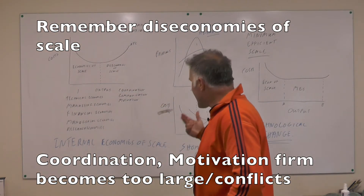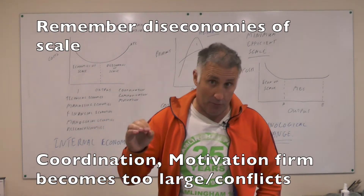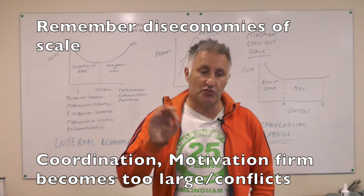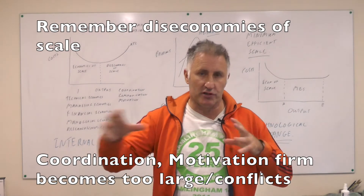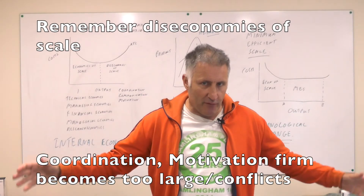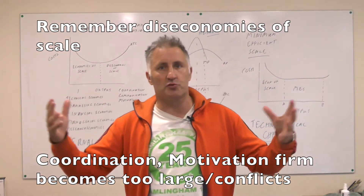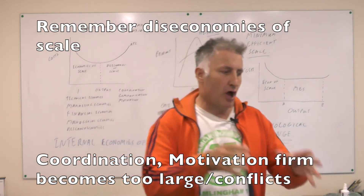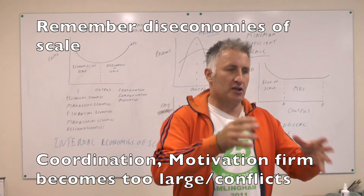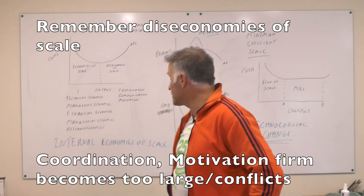We also have external economies of scale, which is a smaller but important point on the syllabus. This is when you have lots of different firms all located together, so there are loads of skills within that area, making it easier to find workers. Also, people know that area is where the firms are, so they're more likely to go there to find your product.